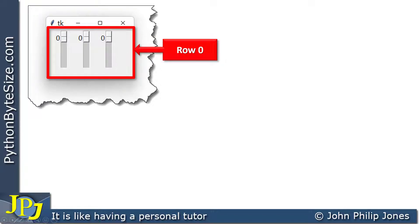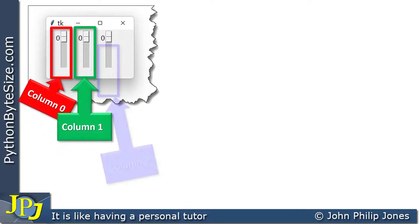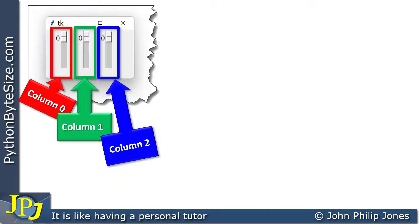The first thing we can see is all of the scale widgets are in the same row. Let's now consider the columns they reside in and we can see that the columns are from column 0 through to column 2.